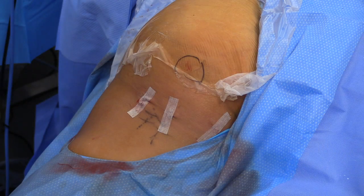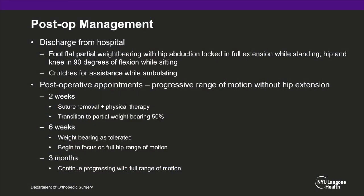The wound was subsequently irrigated, cleaned, and dressed. The patient was discharged with instructions regarding foot-flat weight bearing with a hip abduction brace locked in full extension while standing. The hip and knee were kept at 90 degrees of flexion while sitting, and she utilized two crutches for assistance while ambulating.